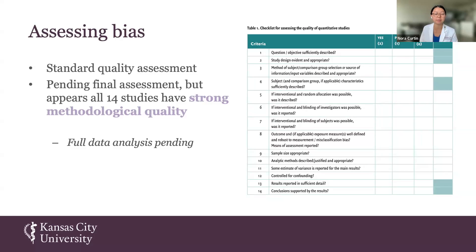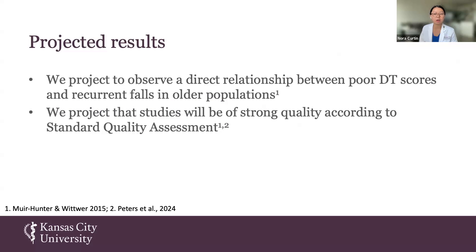This quality assessment is pending analysis from both Alexa and the third party, and we're also pending full analysis and data extraction for all results. With a good general idea of what we have so far, we have some projected findings: I project a direct relationship between poor dual task scores and recurrent falls in older populations, based on Moore and Hunter's study, and that the included studies will be of strong quality according to the standard quality assessment.